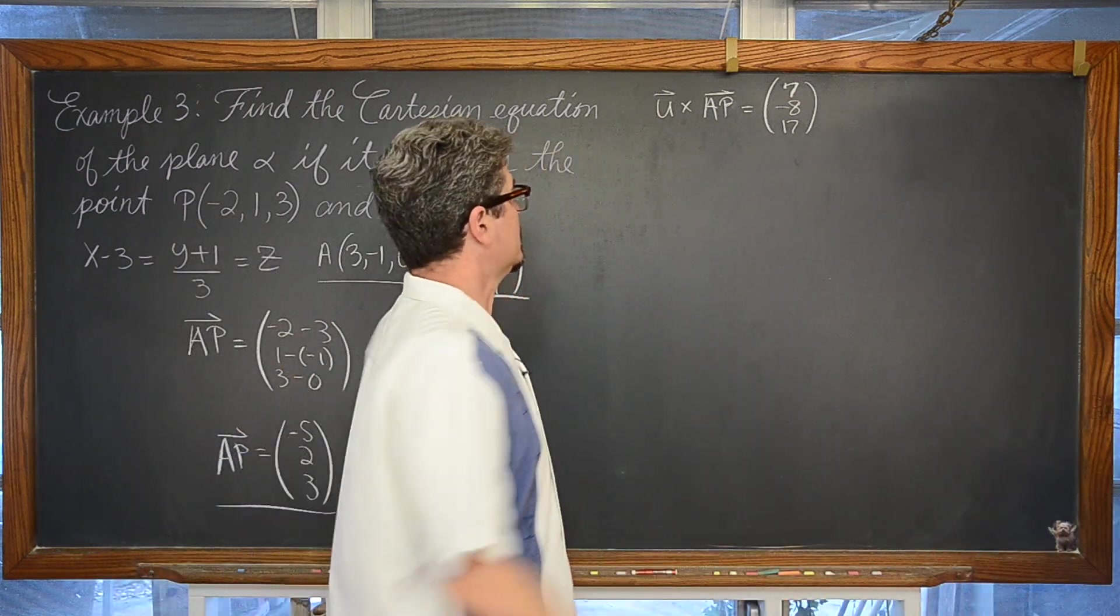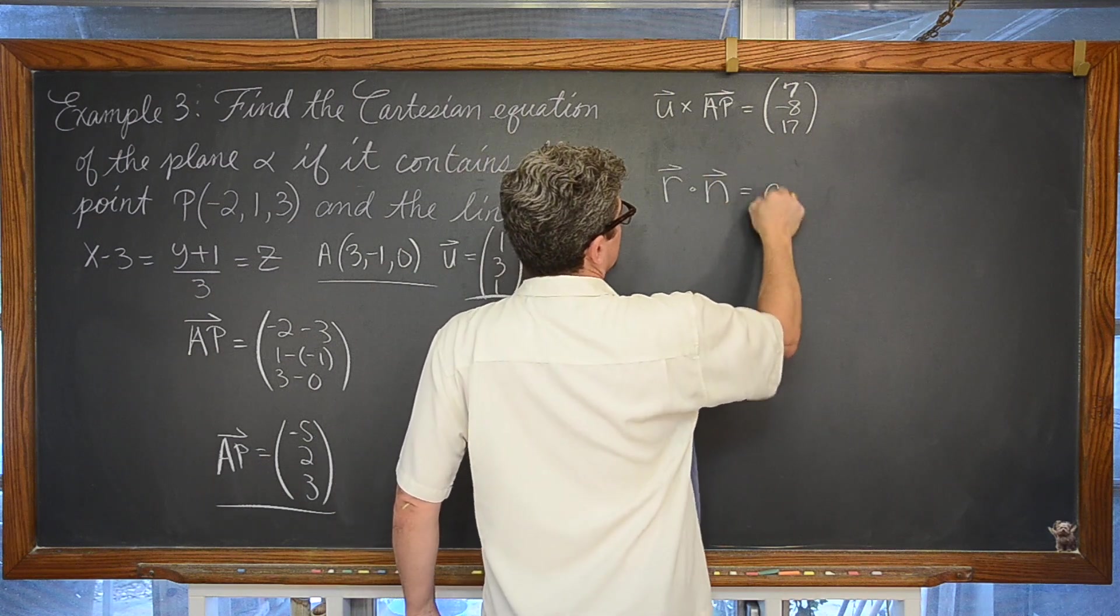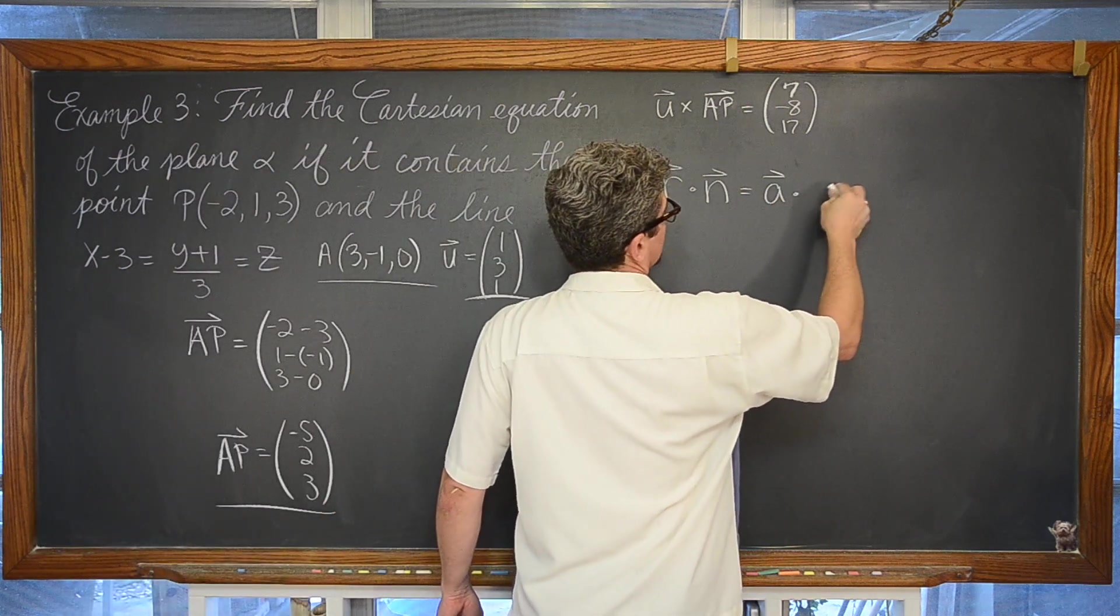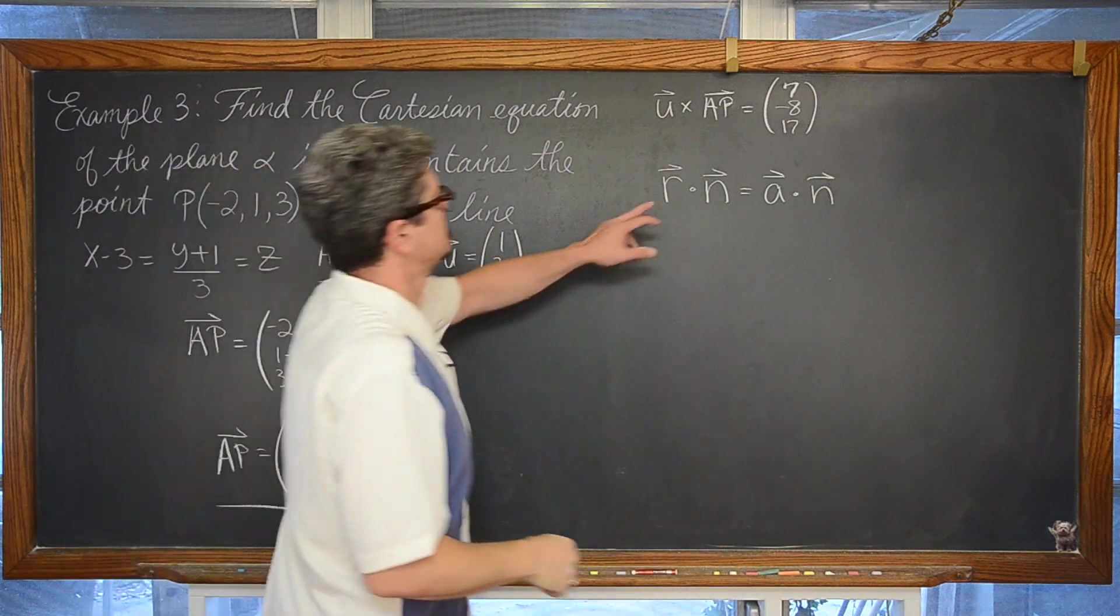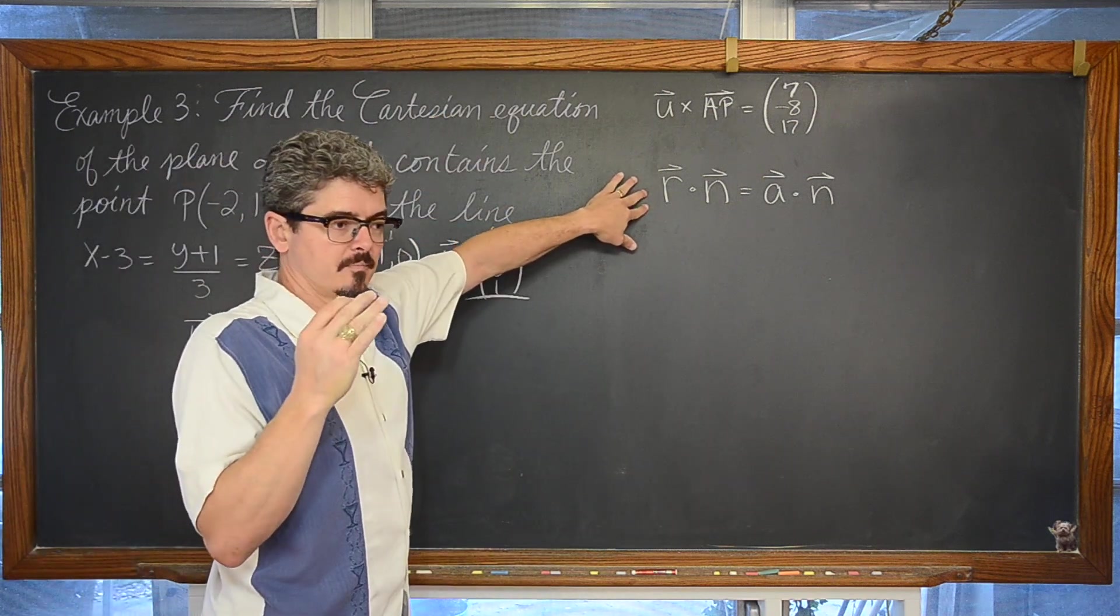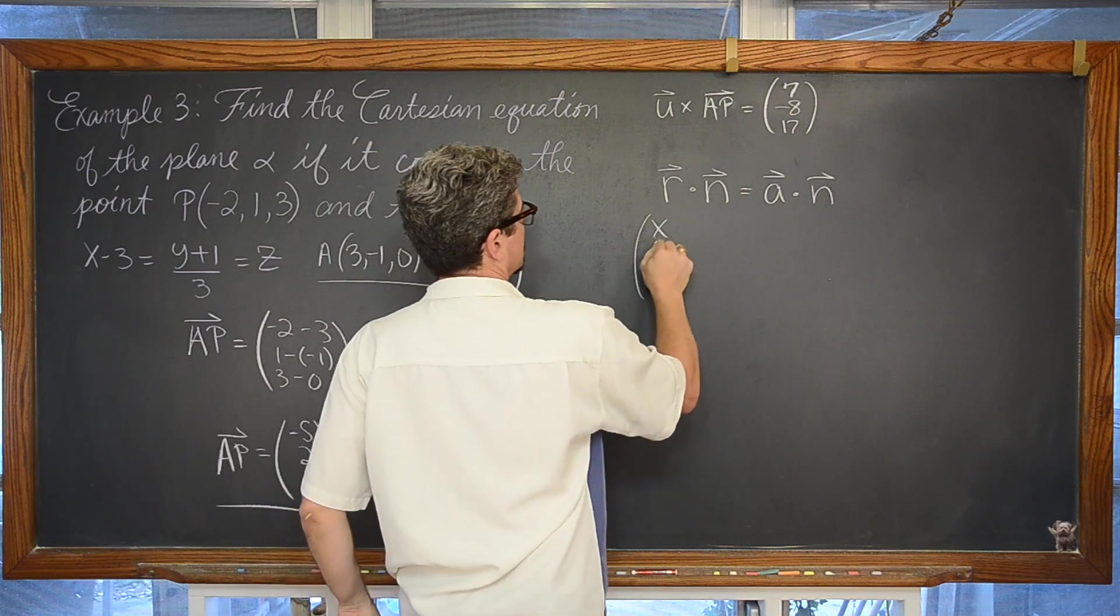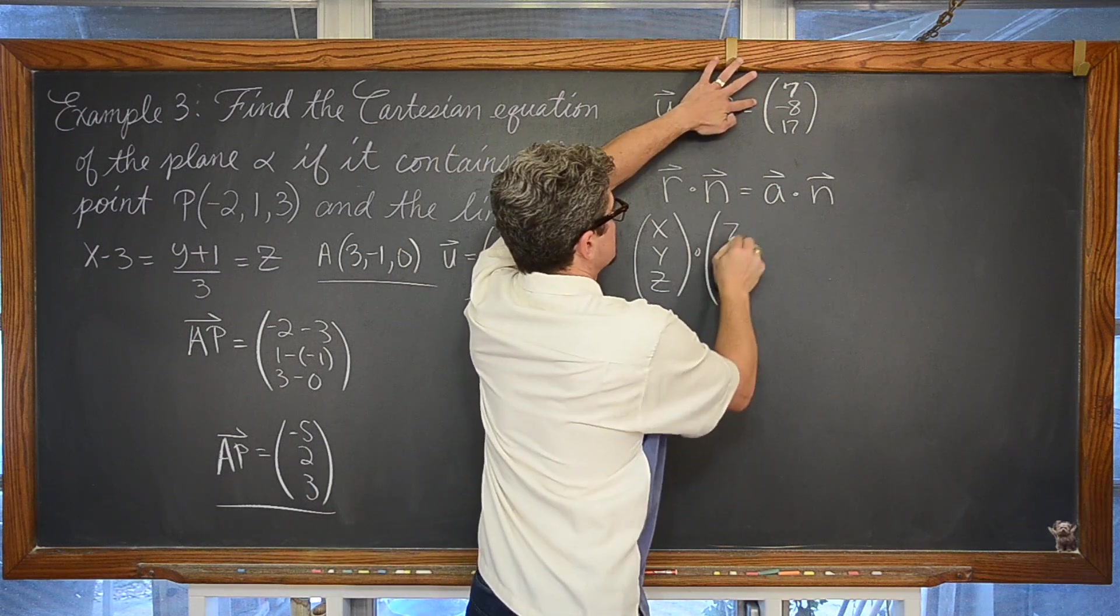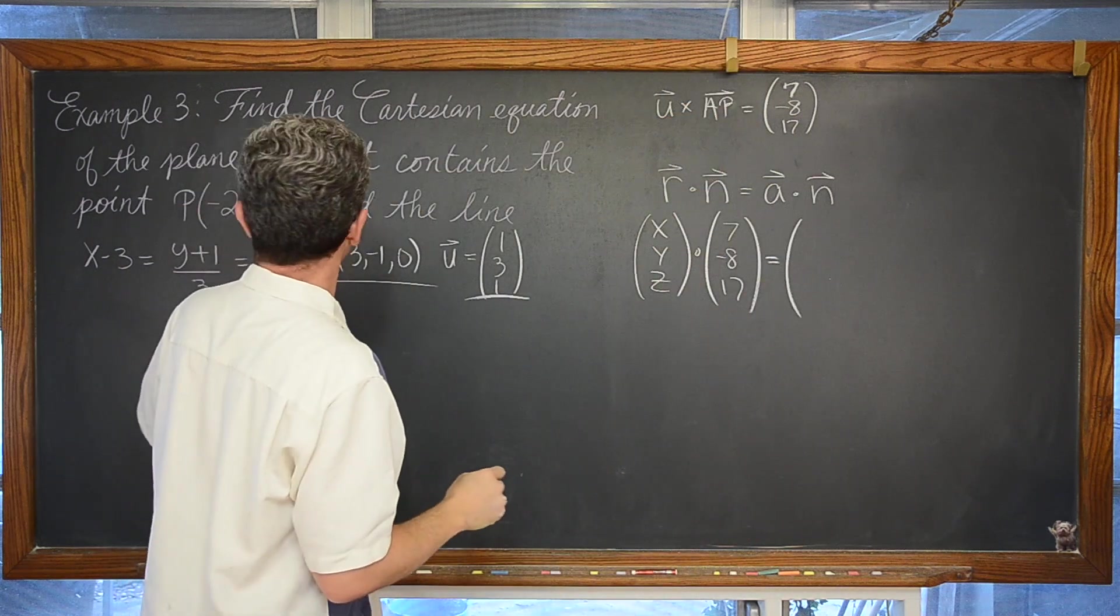Using that normal vector we are going to fill in this formula vector r dotted with our normal vector equals some position vector for a known point on the plane taking that scalar product with that normal vector. And we do want this in Cartesian format. So I'm going to take the vector r and replace it with the component form of x, y, and z, the general point on the plane. Dot it with our normal vector 7, negative 8, 17. We are going to use coordinate a.